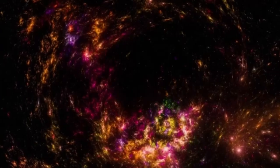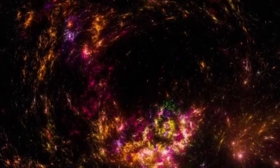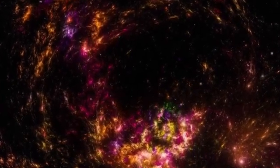As Betelgeuse approaches the final stages of its life, its pulsations and convective activity grow increasingly intense. The depletion of its nuclear fuel sets the stage for a dramatic supernova explosion, marking the end of its existence as a red supergiant.